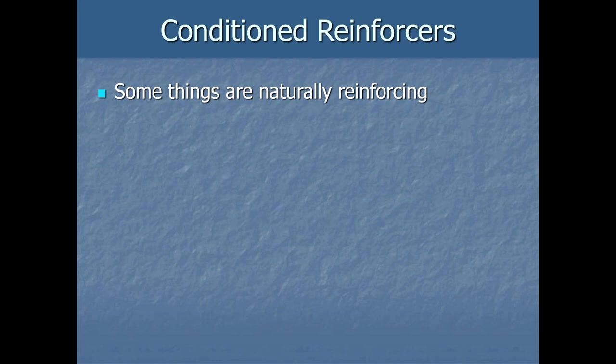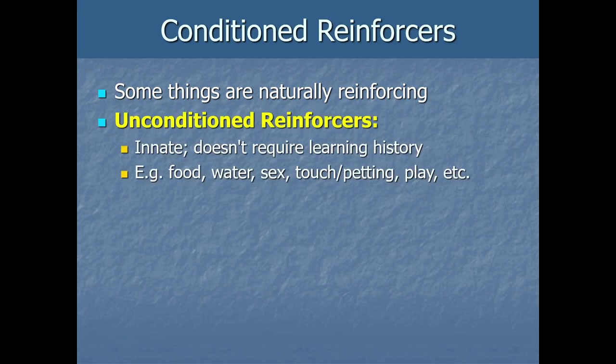Some things are naturally reinforcing — they naturally increase the probability of whatever behavior they follow. We call those unconditioned reinforcers. This is basically another word for a US in Pavlovian conditioning — an unconditioned stimulus that is reinforcing. When we say unconditioned reinforcer, we mean it's innate to the species; it doesn't require any learning history to be reinforcing. For example, food and water: if you're hungry, whatever behavior leads to food, you'll do again. If you're thirsty, whatever behaviors got water, you're more likely to repeat.